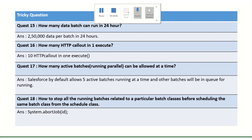How many active batches can run in parallel at one time? Salesforce by default allows five batches to run in parallel. If there are more than five, the additional ones go into the Apex Flex Queue.